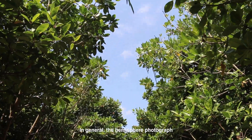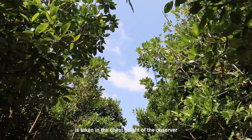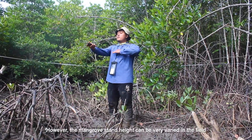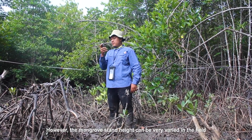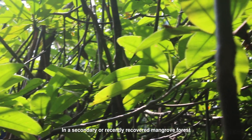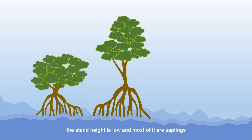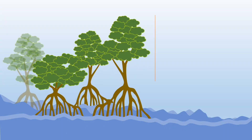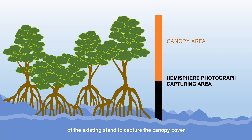In general, the hemisphere photograph is taken at the chest height of the observer. However, mangrove stand height can be very varied in the field. In a secondary or recently recovered mangrove forest, the stand height is low and most stands are saplings. In this type of forest, the photograph is taken at one-third of the height of the existing stand to capture the canopy cover.